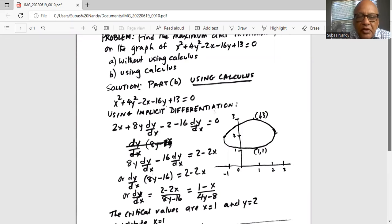We will do differentiation with respect to x. x² becomes 2x, plus 4y² becomes 4, then the 2 exponent comes in as a coefficient to 2, 4 times 2 is 8, and on y you are left with y dy/dx minus 2, the derivative of 2x with respect to x is 2, minus 16 dy/dx, and the derivative of 13 with respect to x is 0.